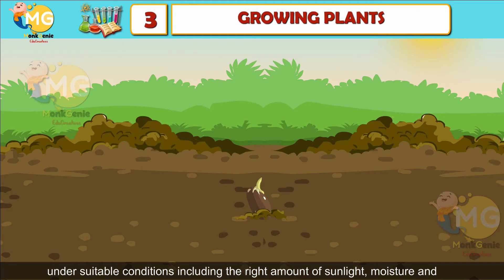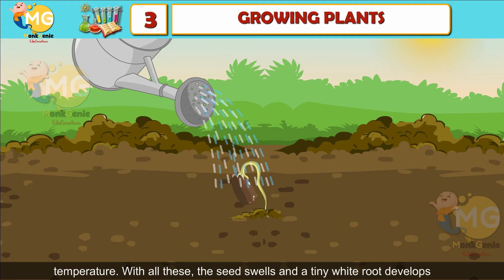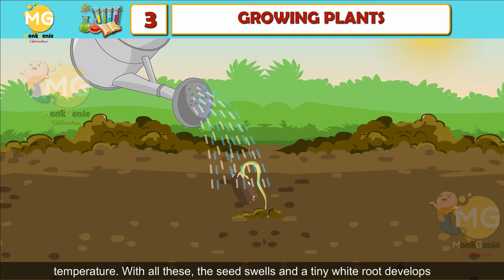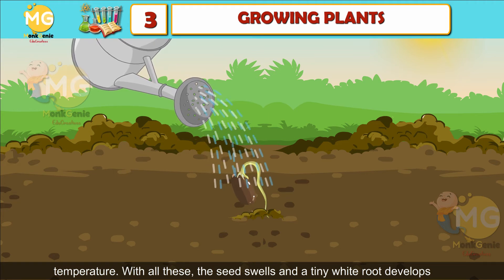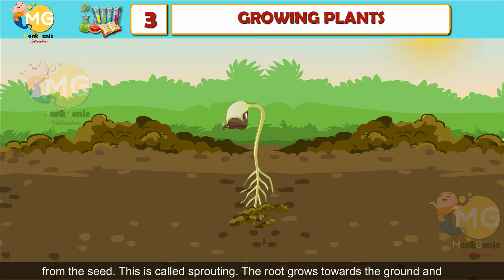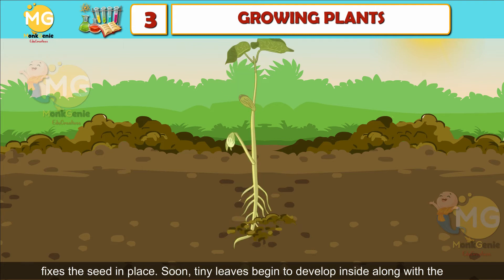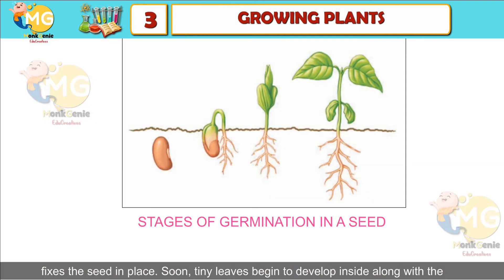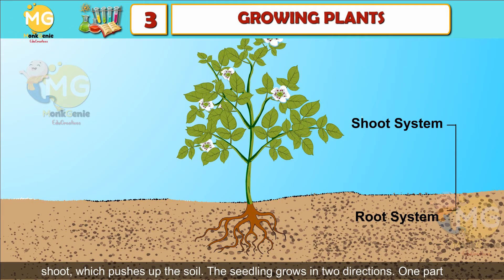Seed germination: germination is the process by which a seed grows into a baby plant under suitable conditions, including the right amount of sunlight, moisture, and temperature. With all these, the seed swells and a tiny white root develops from the seed — this is called sprouting. The root grows towards the ground and fixes the seed in place.